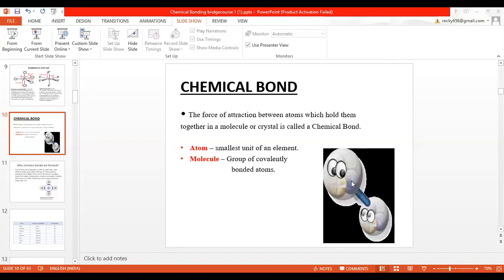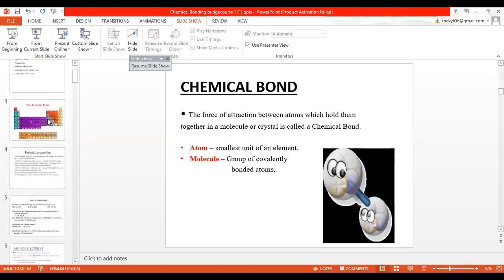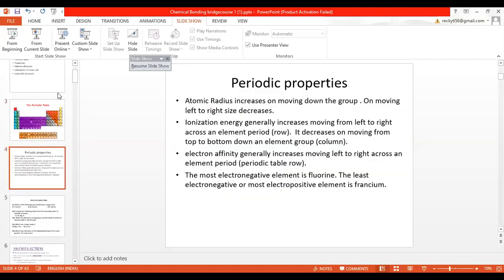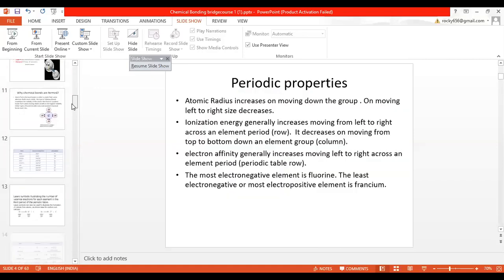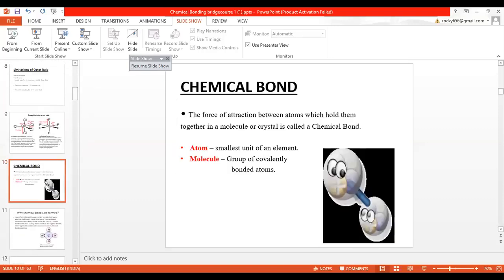Good morning, students. In the second lecture of Briss course of subject chemistry, we are going to start to understand the chemical bond. In the previous lecture, we studied about the properties of the paradigm. Now we are going to study about the chemical bond.